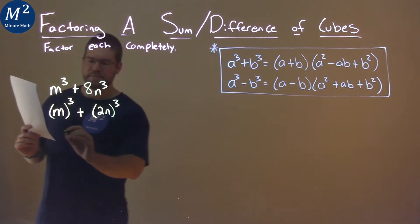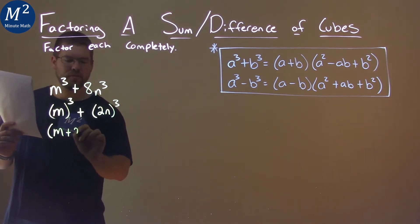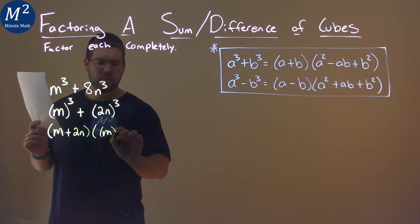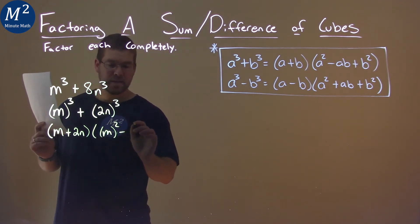So let's use our formula. m plus 2n here is like the a plus b. a squared, so m squared, minus...